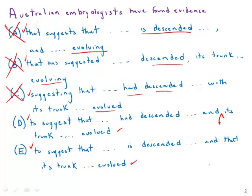D is missing the word 'that' before the second clause — 'to suggest that... and that' — we really need the second 'that,' so we're a little suspicious of D. But what's going on with the verb choice? Both of them have 'evolved' in the past tense — 'the trunk evolved.' So the question comes down to 'had descended' versus 'is descended.'